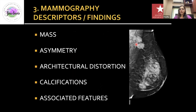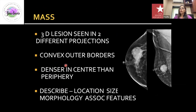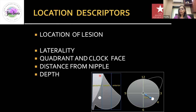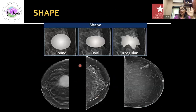The third important point in your report is the descriptors. You can have a mass, asymmetry, architectural distortion, calcifications, and certain associated features. A mass is a three-dimensional structure seen in two different projections, with a convex outer border, denser in the center than the periphery. You describe it with its location — which breast, which quadrant, clock face position, distance from the nipple, and whether it is in the anterior, middle, or posterior depth of the breast.